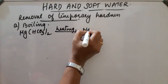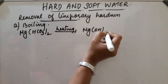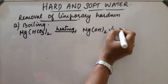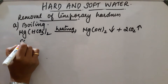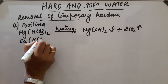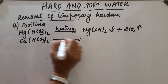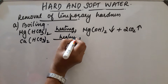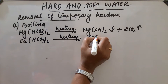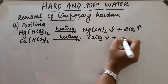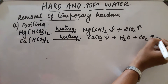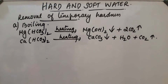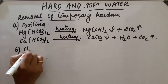On heating, magnesium bicarbonate is converted to magnesium hydroxide — a precipitate is obtained — and carbon dioxide gas is evolved. Then calcium bicarbonate on heating gets converted into calcium carbonate precipitate, plus H2O and CO2 gas. These precipitates can be removed by filtration. The second method is Clark's method.